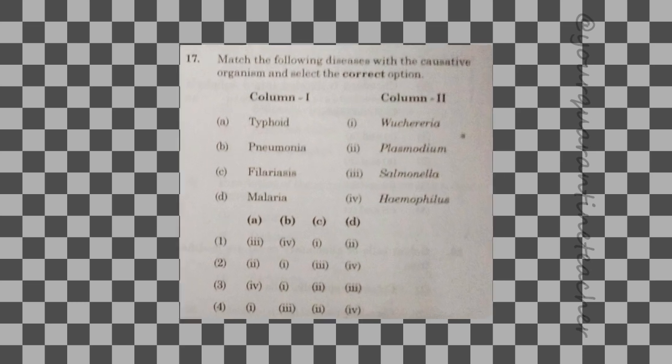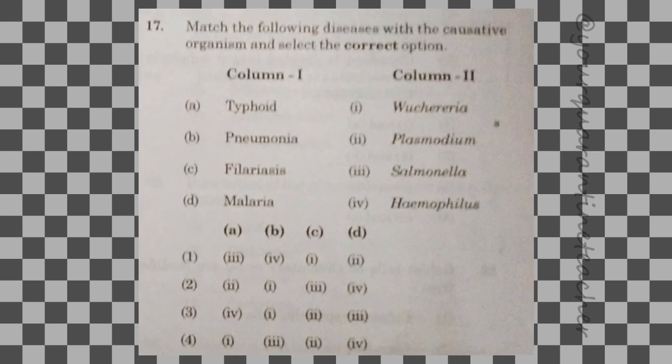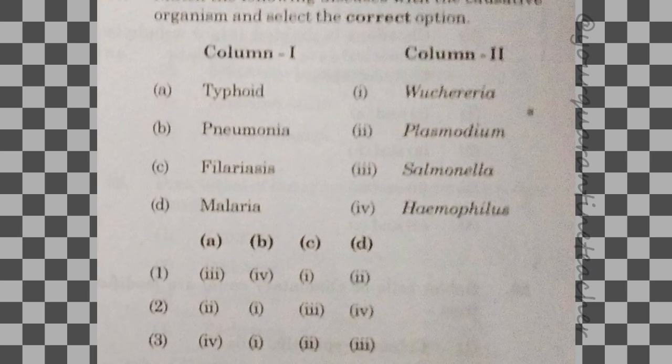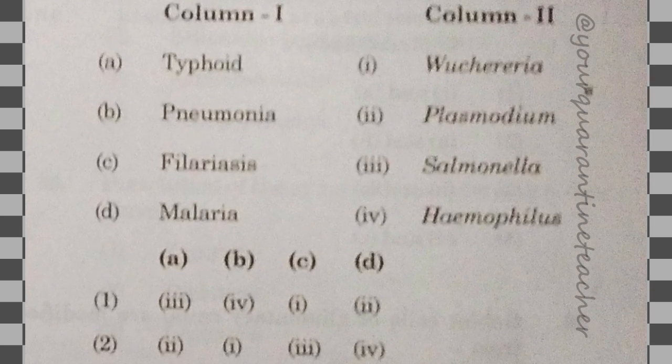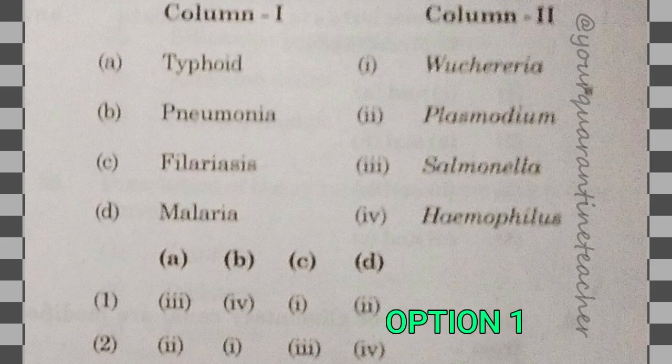17th question — a direct question. The answer is option 1 — typhoid. The causative organism for typhoid is Salmonella typhi. So A3 is the answer, option 1.